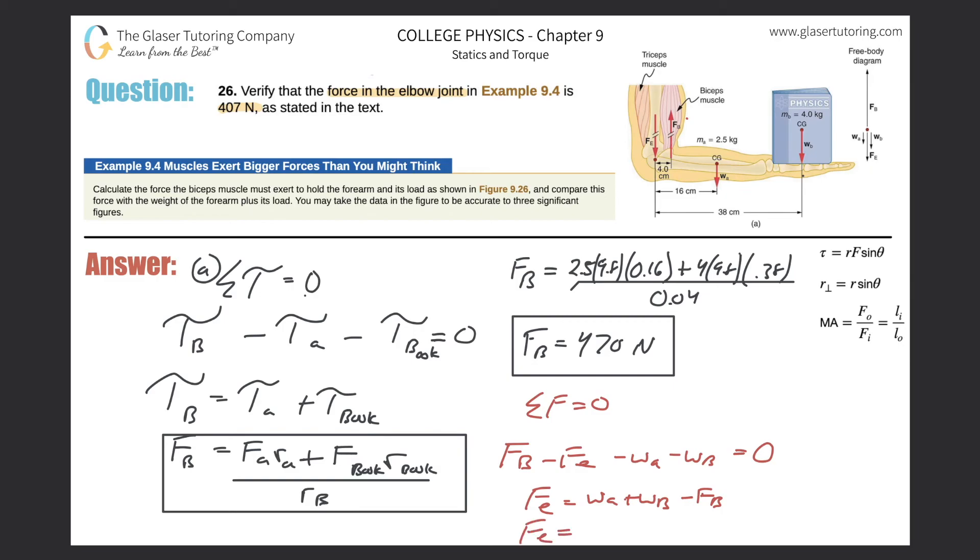Here, just plugging everything in, the force at the elbow joint should be the weight of the arm, which is 2.5 times 9.8, plus then the weight of the book, which is 4 times 9.8, minus then the 470 that we just found. So 2.5 times 9.8, plus 4 times 9.8, minus 470. And that's going to be negative. And that should be what the answer is. It's pointing downward. So it comes out to be the force here of the elbow or at the elbow is going to be negative 407. Voila.